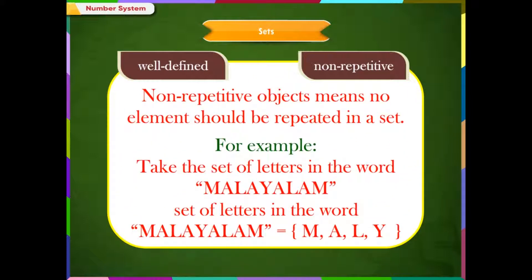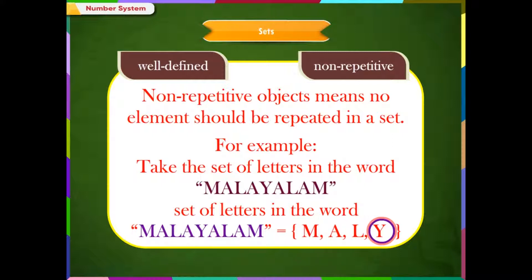For example, take the set of letters in the word Malayalam. Though there are 9 letters in this word, only M, A, L, Y is taken. Others are just the repetition of the same letters.